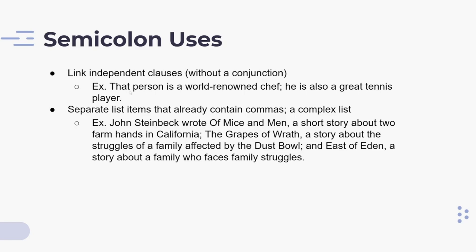In this example, it says: 'That person is a world-renowned chef. He is also a great tennis player.' There is a semicolon between the first independent clause and the second, with no conjunction between them — only a semicolon followed by another independent clause. Note that a period could also replace this semicolon, with the H capitalized, thus making two separate independent clauses.